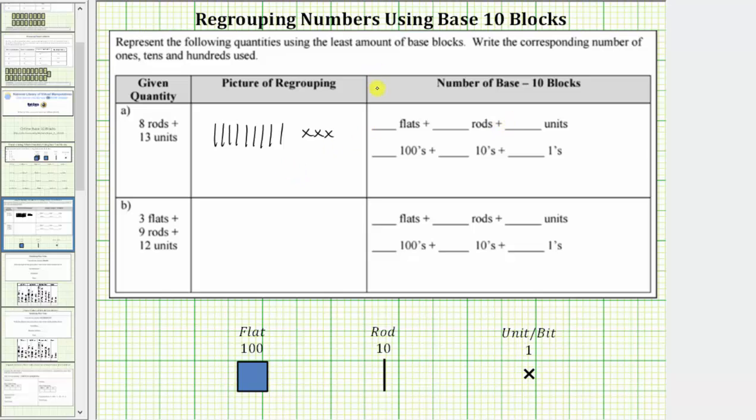For the next column, we have zero flats plus nine rods plus three units, which is equivalent to zero one hundreds plus nine tens plus three ones, giving us the number 93.